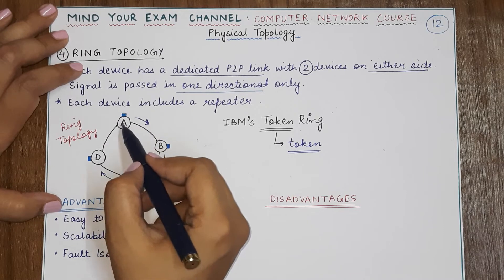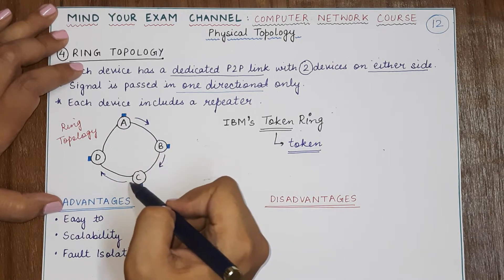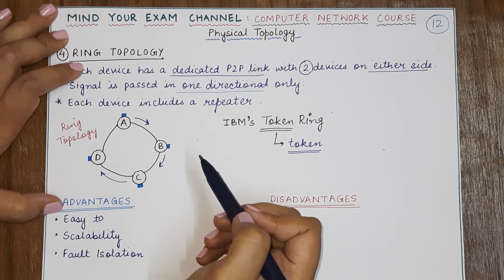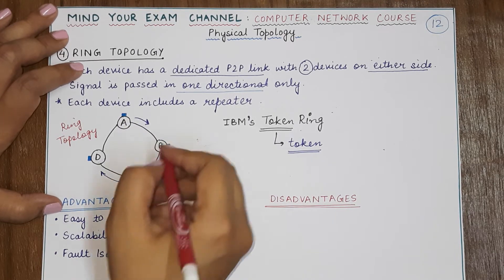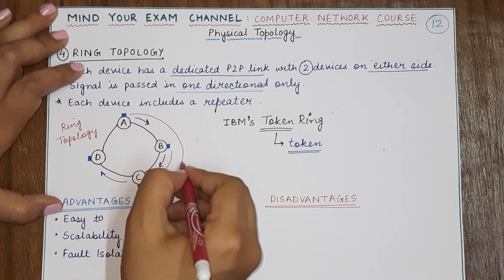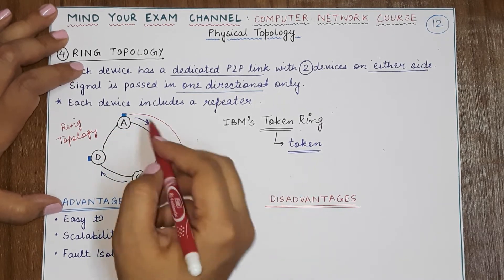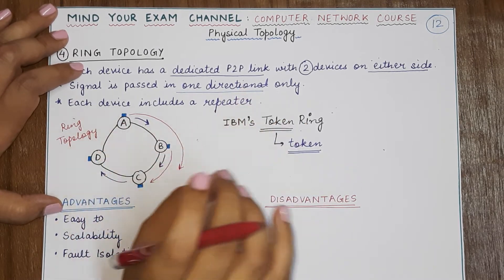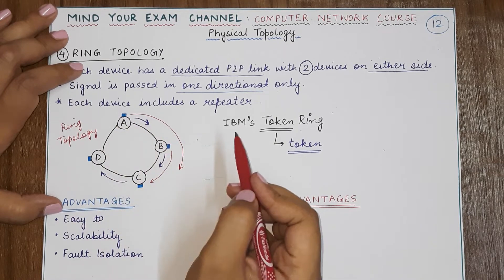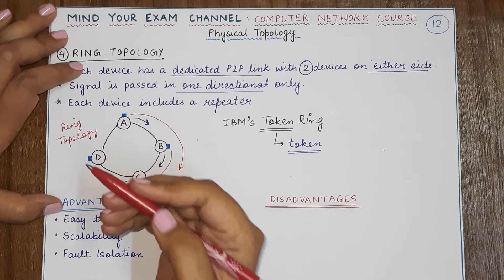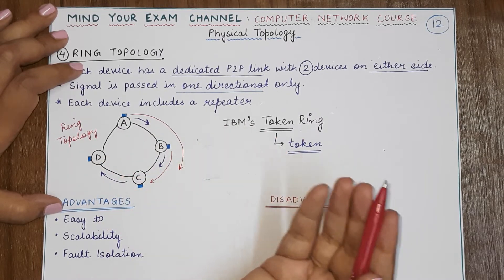See, there can be a situation when B wants to send data to D and A also wants to send data to C. So if B also starts sending and A also starts sending, then it might happen that their data might collide and they become garbage.